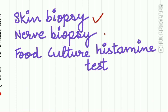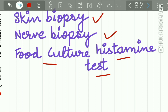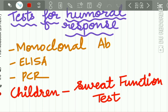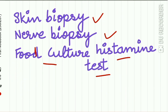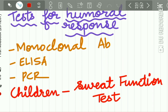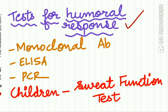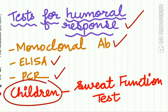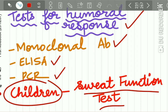Diagnosis can also be done by skin biopsy, nerve biopsy, foot culture, and histamine test. Tests to elicit the humoral response include the monoclonal antibody test, ELISA, and PCR, while in children the sweat function test can also be used.